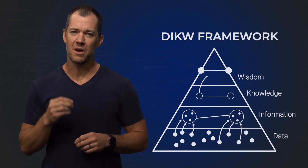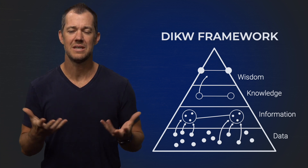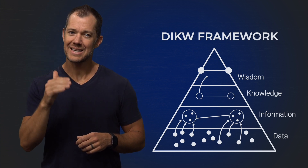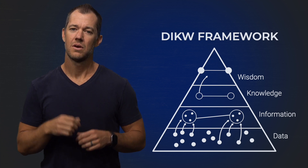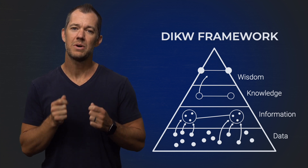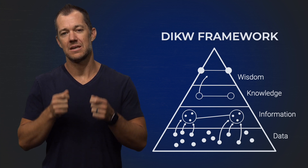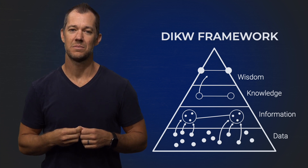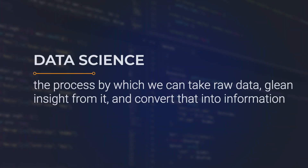How we move from knowledge to wisdom is a matter of deep philosophical debate, so we won't get into it here. But if we go back down to the bottom of the triangle, what we want to do is ask the question: how do we go from data to information? And this is exactly where data science comes in. Data science is a process by which we can take raw data, glean insight from it, and convert that into information, so we can then use that to make connections, to have actionable knowledge and move on.